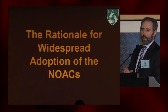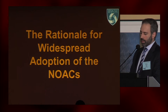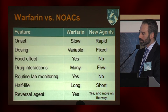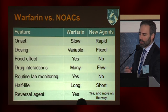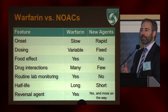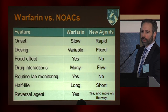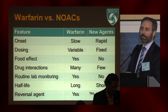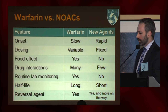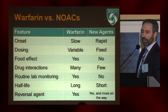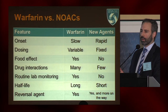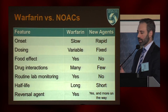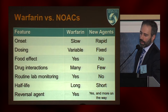Because it's so difficult to manage patients with warfarin, there's been incredible interest in the non-vitamin K oral anticoagulants and really widespread adoption. Compared with warfarin, these NOACs have a rapid onset — within a few hours, patients are fully anticoagulated. The dosing is much easier, really a fixed dose for the vast majority of patients. There are very few drug-drug and drug-food interactions, you don't need routine laboratory monitoring, and the half-life is short. So if a patient comes in bleeding and their last dose was over 12 hours ago, you're already seeing the anticoagulant effect wearing off.